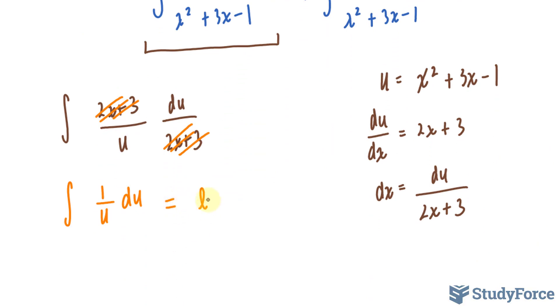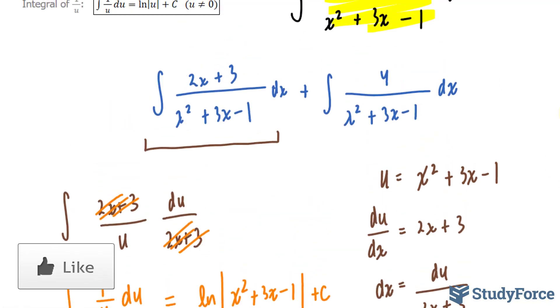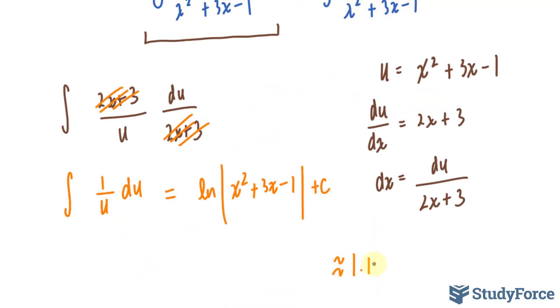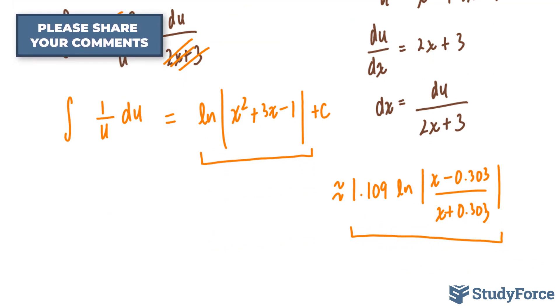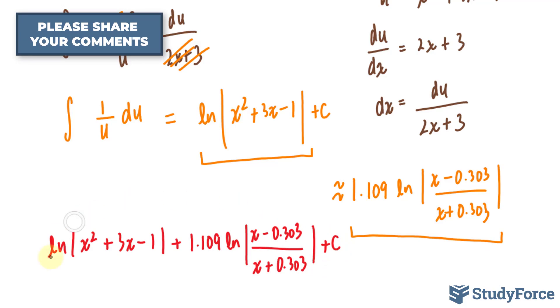So I have ln the absolute of what u is equal to, which was x squared plus 3x minus 1 plus c. Now, as I mentioned earlier, we already have the answer to this. The integral to this function is the following. It was approximately 1.109 ln of x minus 0.303 and x plus 0.303. So combining this expression with this expression plus an arbitrary value c, we end up with the following answer.